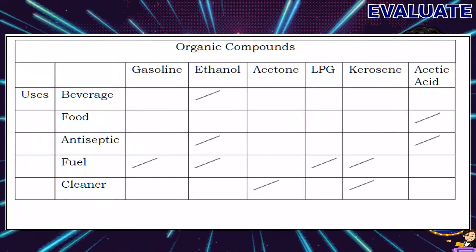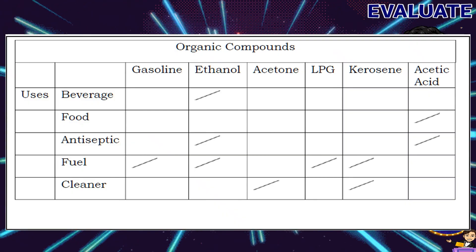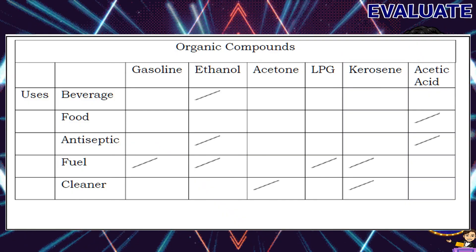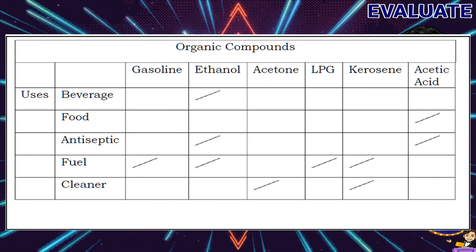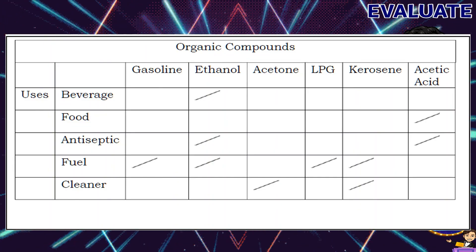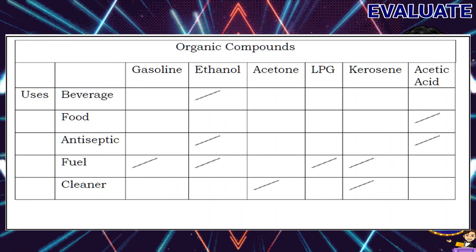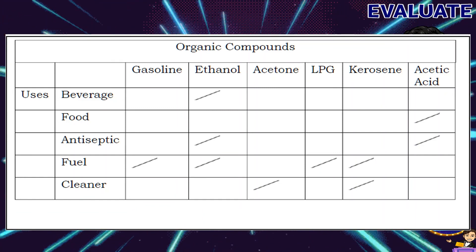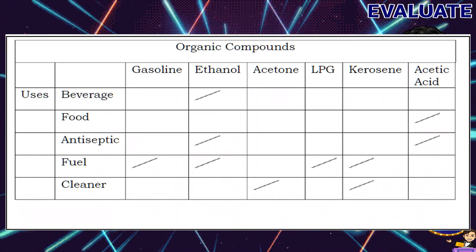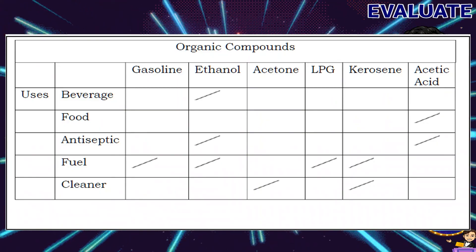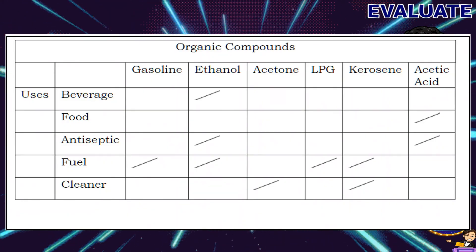Here are the correct answers: gasoline is used for fuel; ethanol is used as a beverage, antiseptic, and fuel; acetone is used as a cleaner; LPG as a fuel; kerosine as a fuel and cleaner; and acetic acid is used for food processing and as an antiseptic.